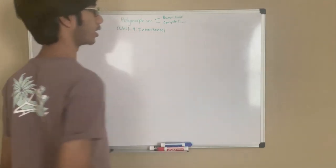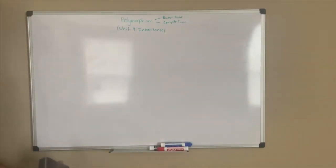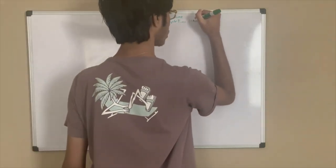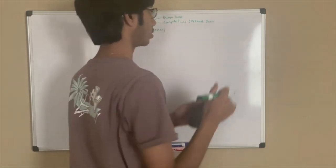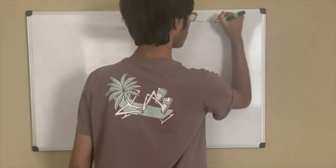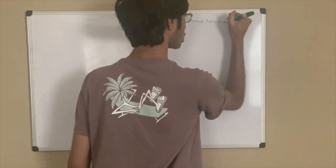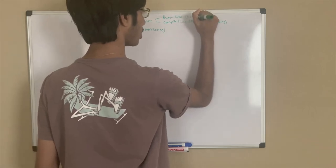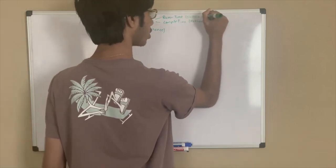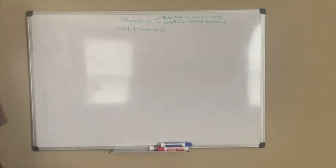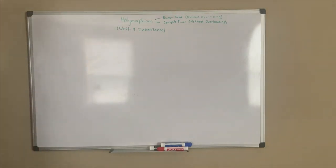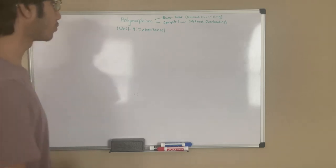Polymorphism is divided into two types, and you've already learned those two types because I've already put them on the channel. Those two types are method overloading, which is the synonym for compile time polymorphism, and method overriding, which is runtime polymorphism. So you already know how polymorphism works — you just haven't heard the full term. Polymorphism consists of method overloading and method overriding.